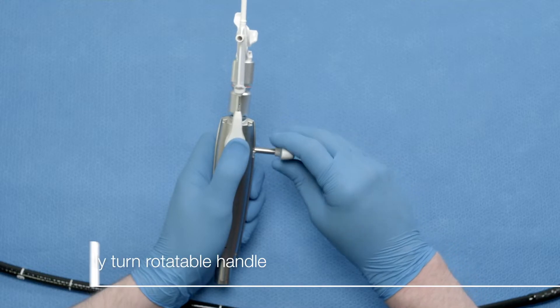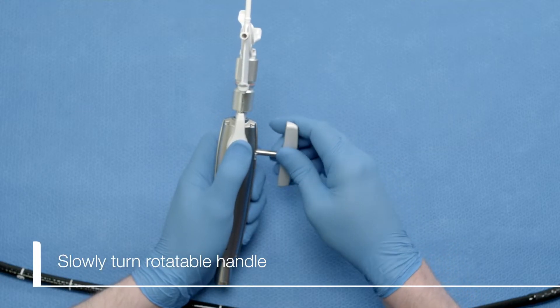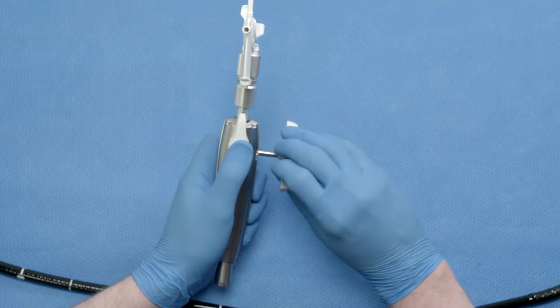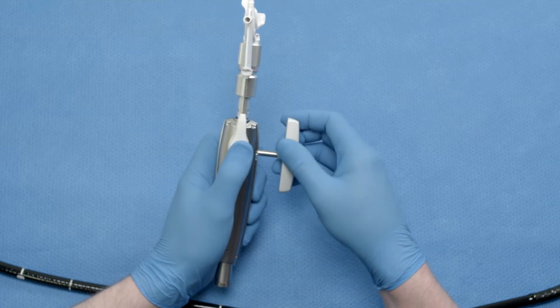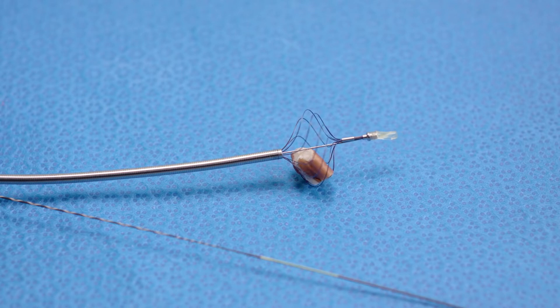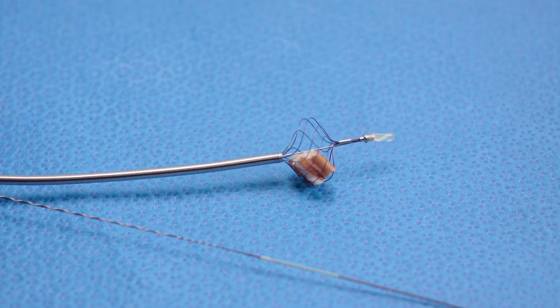Slowly turn the handle to close the basket around the stone and eventually crush the stone, or cause the basket to break. It is important to turn no faster than you see here, or the stone can slip out of the basket.